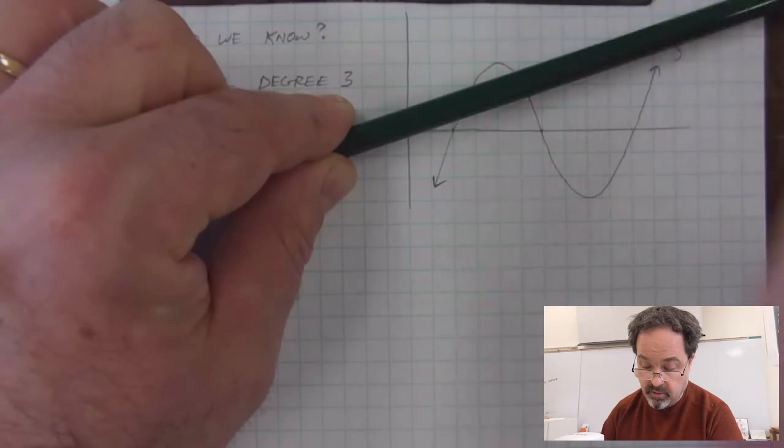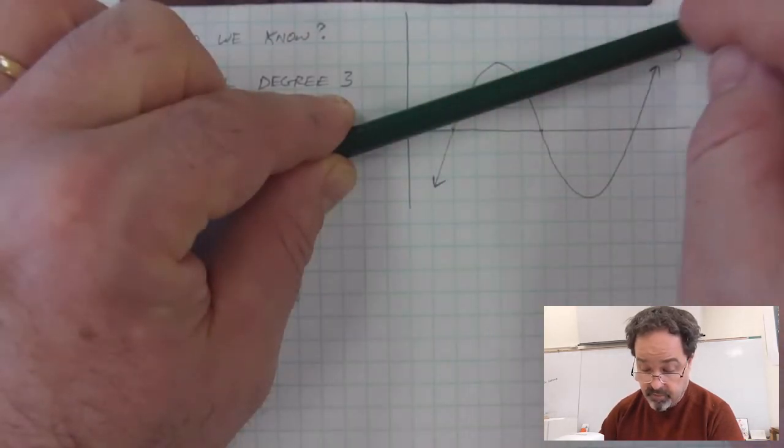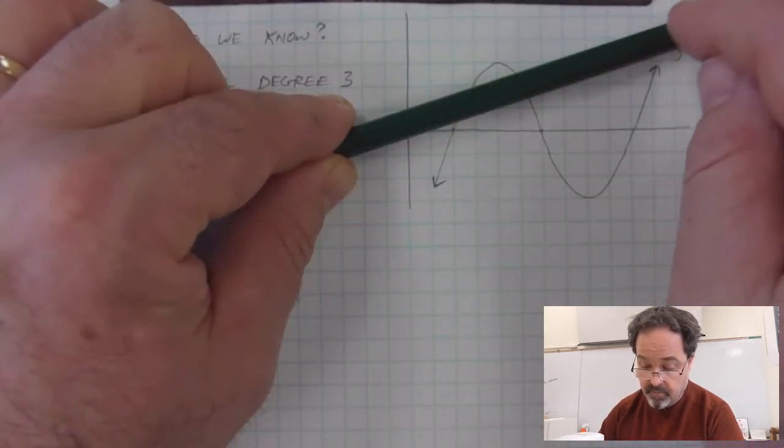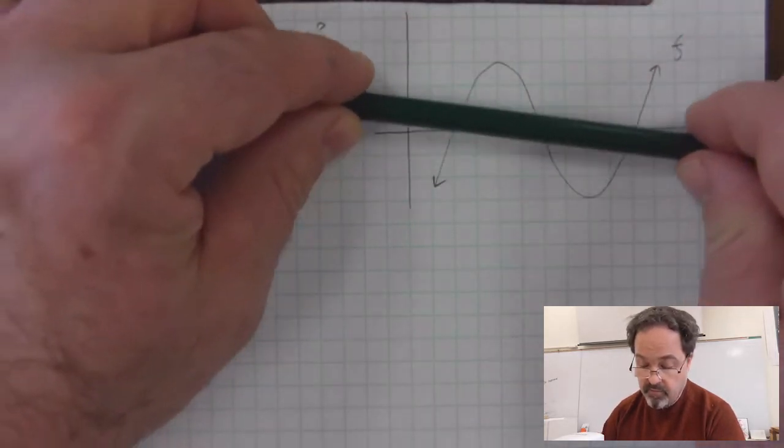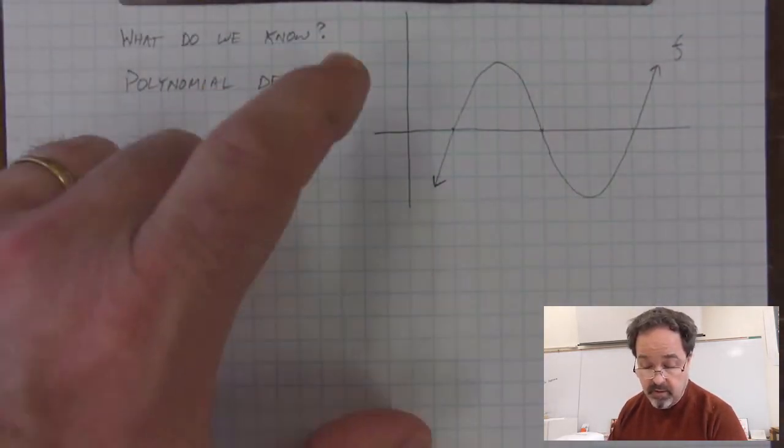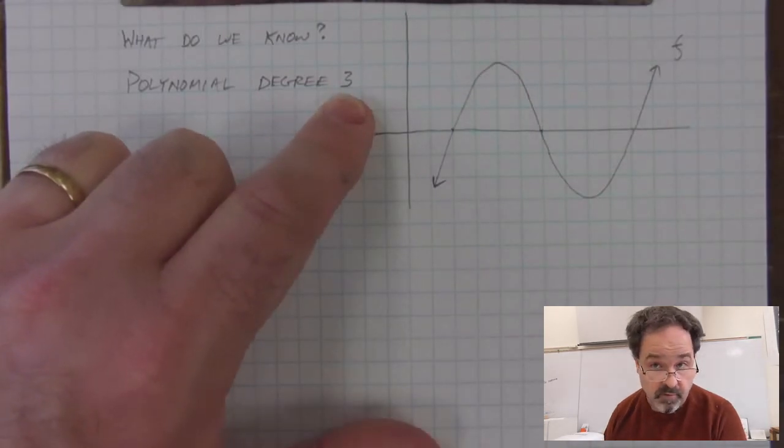We could put a line here and get two intersections. Well, there'll be a third here if the function was shown to go up. But the maximum number of intersections that we can find with a line is 3. Its degree is 3.